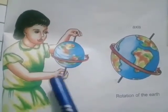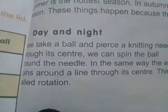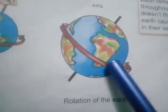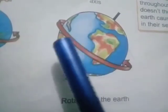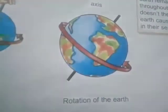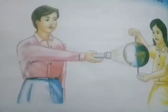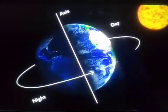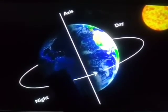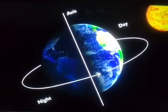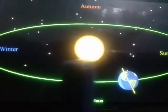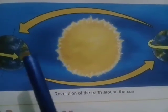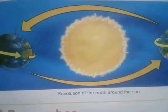Now we recall the main points of the chapter. Day and night are formed due to the rotation of the earth. Rotation is the spinning movement of the earth around its axis, and this causes day and night — as shown in the torch and ball experiment. When the portion of the earth faces the sun, day is formed; when it faces away, night is formed. The earth also moves around the sun — this movement is called revolution — and revolution of the earth causes the seasons.